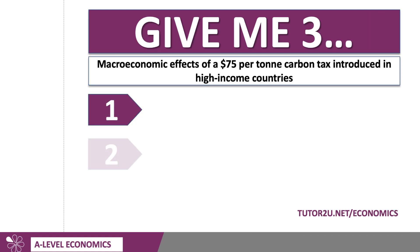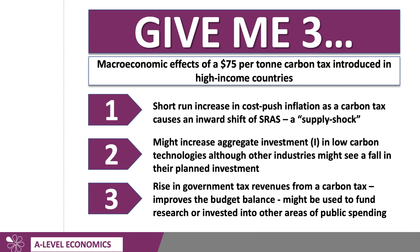Now thinking about the macro consequences — things like aggregate demand and aggregate supply, and the key macro objectives: growth, inflation, jobs, the budget balance, and so on. One idea is that this is a supply shock: imposing a new tax could cause a short-run increase in cost-push inflation as a carbon tax causes an inward shift of short-run aggregate supply. You could use an AD/AS diagram to illustrate that. On the demand side, it might actually increase aggregate investment spending by businesses producing low-carbon technologies, although other industries might see a fall in planned investment, so the overall impact on investment as part of C + I + G + X − M is perhaps unclear.